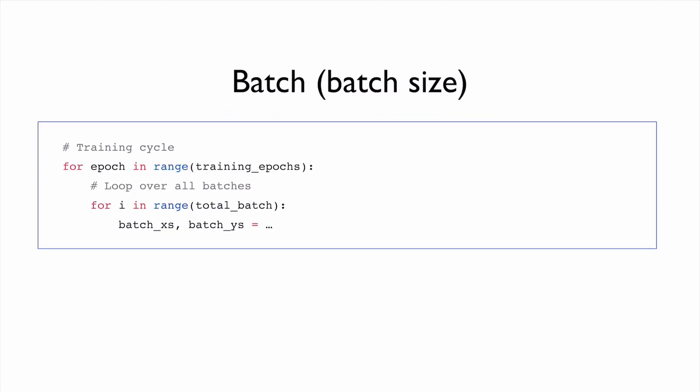So usually what we do is that we divide the entire dataset into small batches with this batch size, and we go through each batch at once, and then we compute the gradients, and then we update our weight.